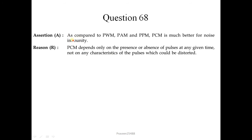Question number 68. Compared to PWM, PAM, and PPM — pulse width modulation, pulse amplitude modulation, and pulse position modulation — PCM (pulse code modulation) is much better for noise immunity. This is correct. PCM depends only on the presence or absence of pulses at any given time, not on any characteristic of the pulses which could be distorted. This is also correct and the correct explanation. So option 1 is the answer.